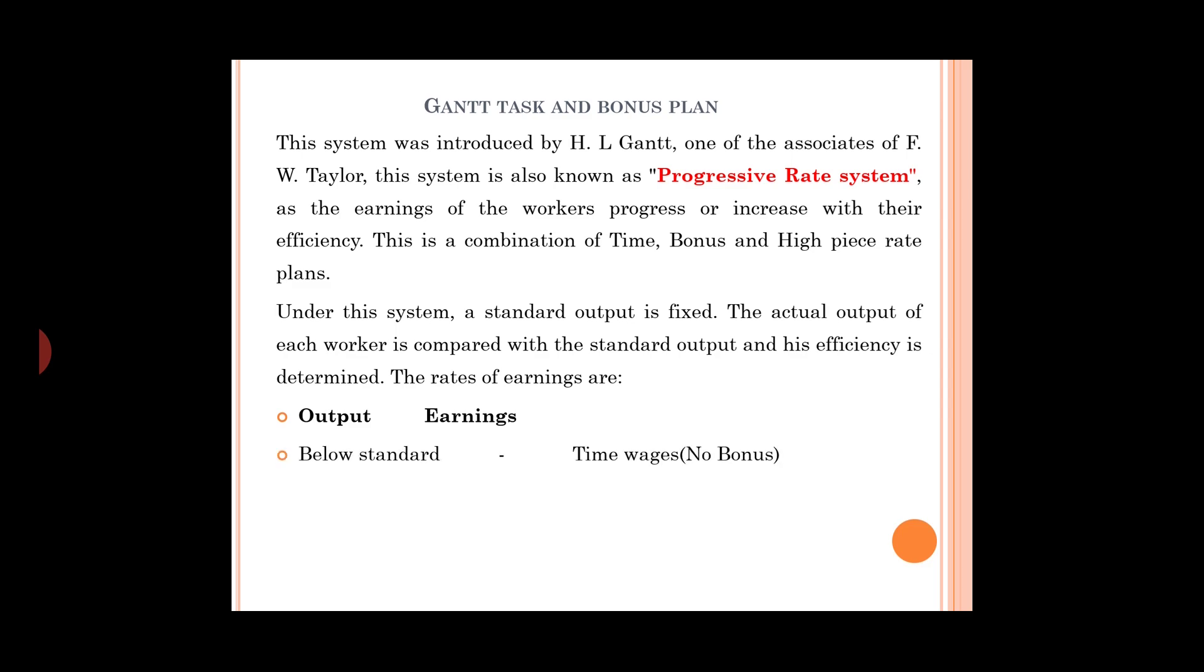Below standard: time wages, no bonus. Below standard efficiency, time wages are given. At standard: time wages plus 20% of time wages as bonus.